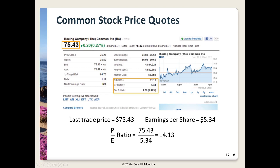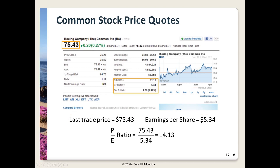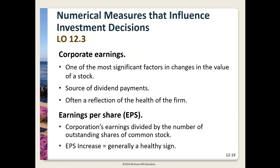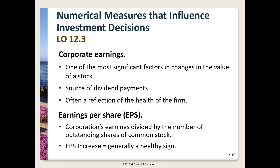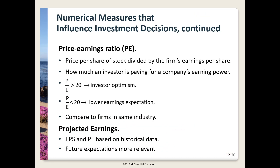This slide demonstrates how some numbers fit together for the Boeing company. Given: stock price $75.43, annual dividend $1.76, PE ratio 14.13, earnings per share $5.34. The PE ratio equals the price per share divided by earnings per share: $75.43 divided by $5.34 equals 14.13. We focus on price-to-earnings and earnings per share because earnings is the most important number influencing a firm's stock value — it reflects the firm's financial health and is the number analysts watch and forecast.